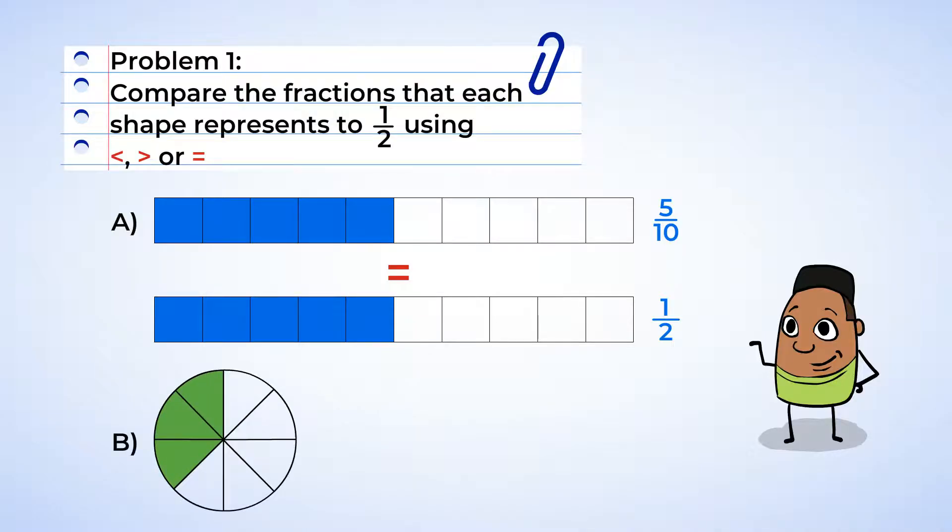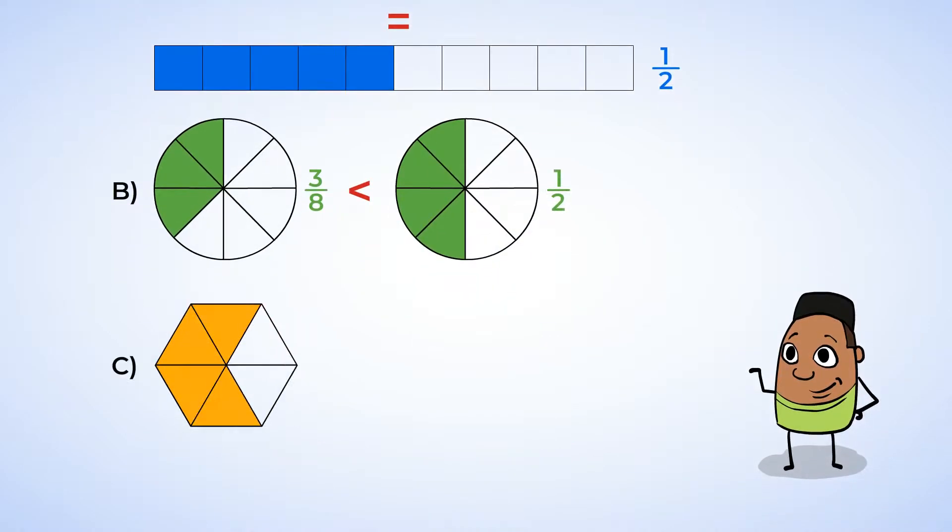And next, we have shape B. Okay, there are eight total sections. And half of eight is four. So our circle that represents one-half should have four sections shaded in. And it looks like shape B is less than one-half. So we're going to use the symbol for less than. And our last shape, C, has six total parts. So half of six is three. And since fraction C has four sections shaded in, it is greater than one-half. So let's place the greater-than symbol in between the shapes. Nice!